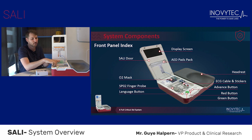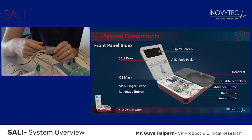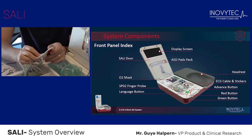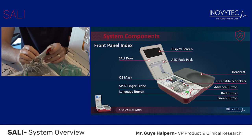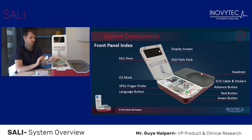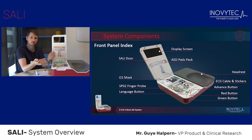Next, we have the SpO2 finger probe that will monitor the patient's saturation levels. Here we have the ECG stickers that will help you monitor the patient's ECG without having to undress the patient, by simply attaching both stickers to the wrist of the patient — like so.